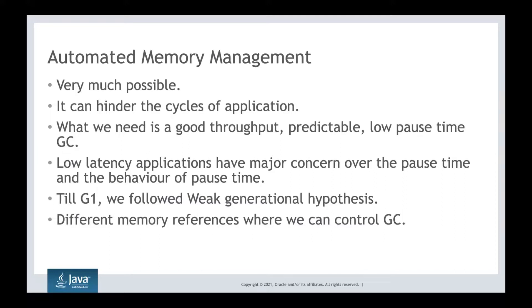With such a low pause time in ZGC, we came out from the weak generational hypothesis. We discussed this in Chapter 1 — a lot of objects die young, and only a few live longer, so we reclaim short-lived objects faster. That is why we created the young generation and old generation partition in the heap — the young generation runs GC more frequently to reclaim short-lived objects.